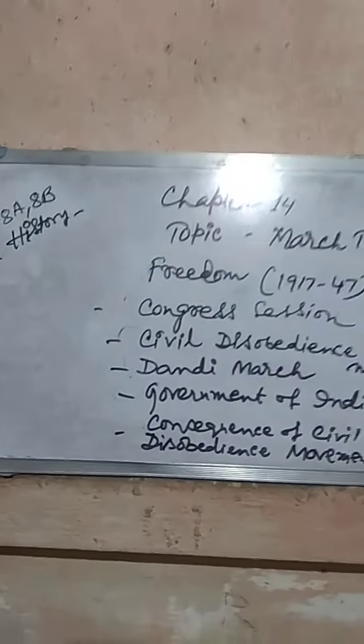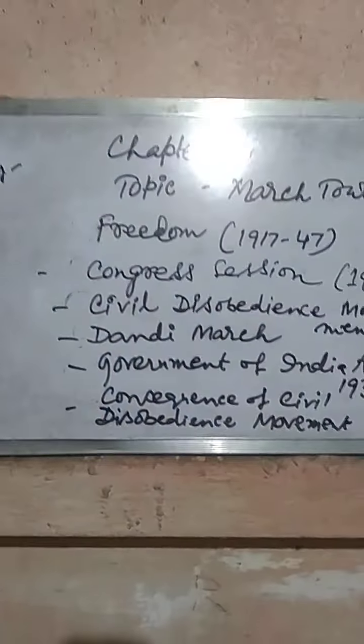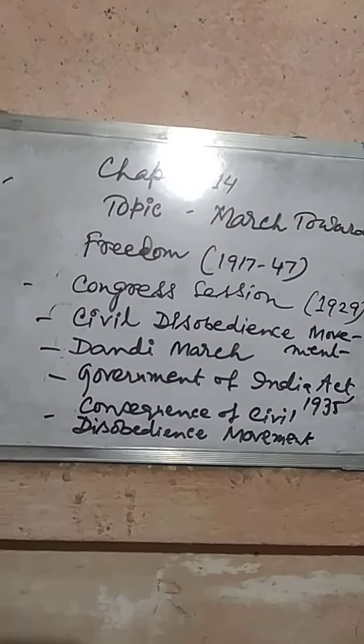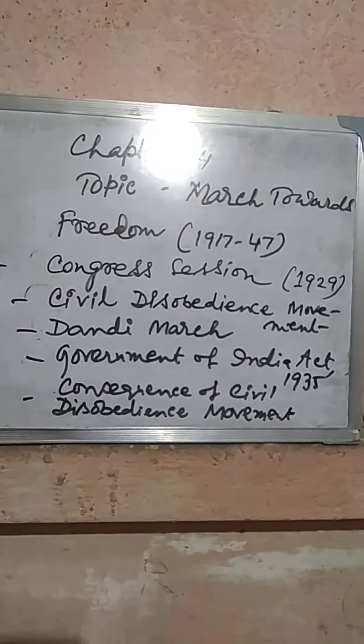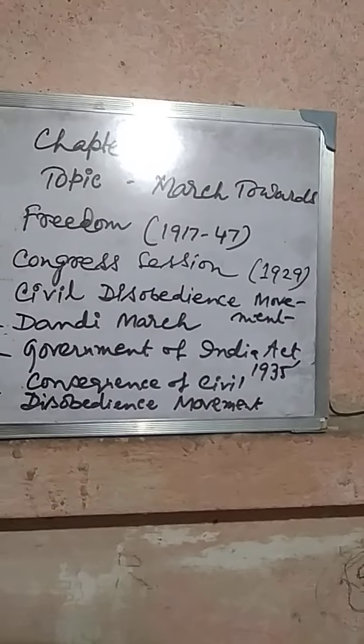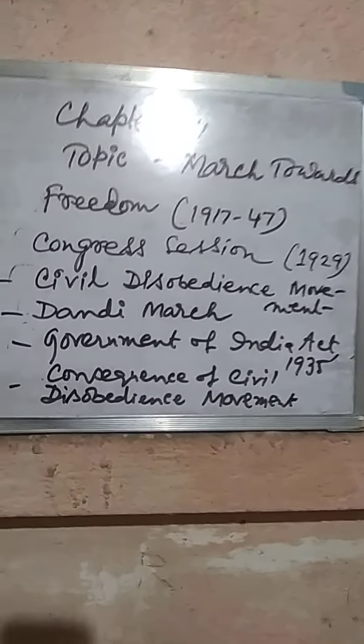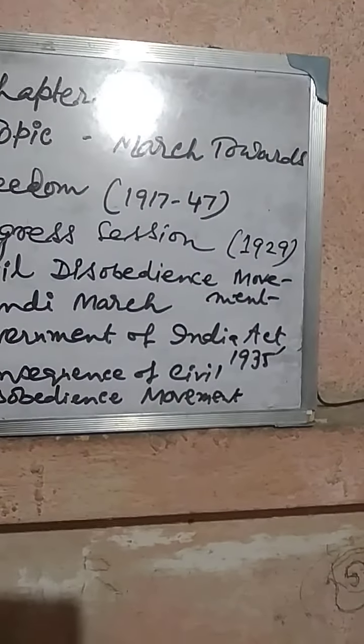Dear students of class 8A and 8B, welcome to this history class. Today's lesson is 'The March Towards Freedom: 1917 to 1947.' The main points are: the Congress session of 1929, the Civil Disobedience Movement, the Dandi March, the Government of India Act 1935, and consequences of the Civil Disobedience Movement.